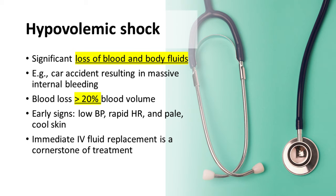Hypovolemic shock occurs when there is a significant loss of blood and body fluids, often due to trauma or injury. For example, a severe car accident resulting in massive internal bleeding can trigger this type of shock. When a person loses approximately one-fifth or more of their blood volume, the heart has difficulty pumping enough blood to vital organs, causing a deficiency in oxygen-rich blood circulation that can lead to organ dysfunction and even failure.